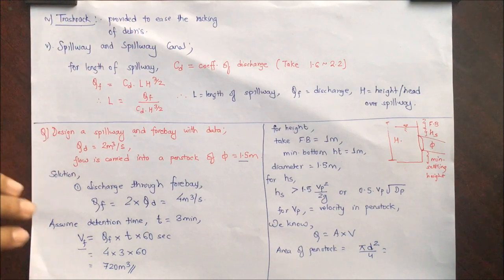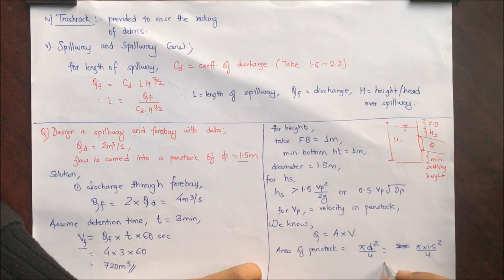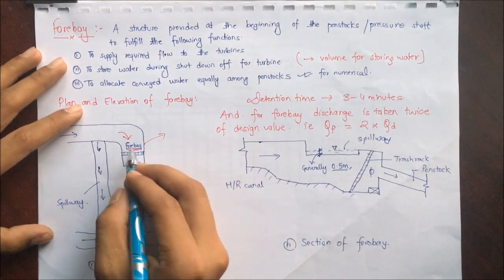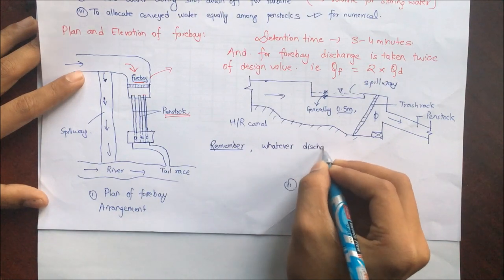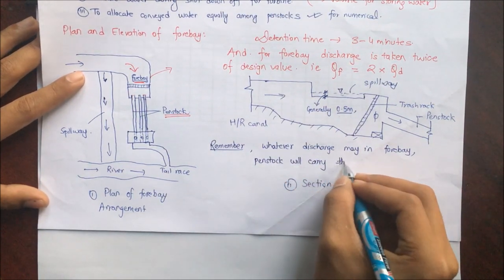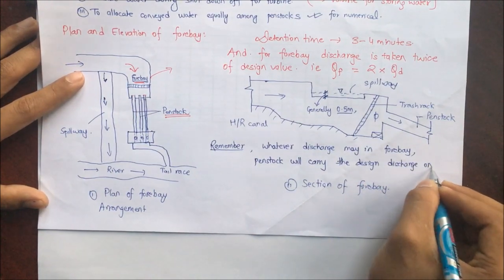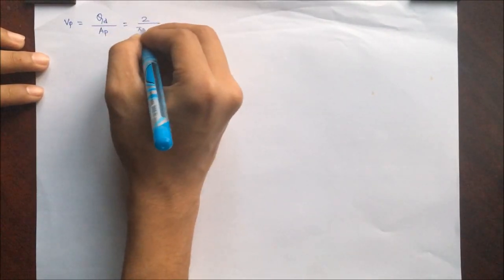Substituting, Ap = π × 1.5² / 4. Then Vp = Qd / Ap. The design discharge Qd is used here — not the forebay discharge — because the penstock carries the design discharge to the turbine. The forebay is designed to store excess water during shutdown of the turbine. So Vp = Qd / Ap = 2 / (π/4 × 1.5²).